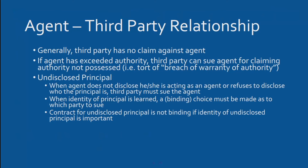Regarding the agent-third party relationship: generally a third party has no claim against an agent. However, if an agent has exceeded their authority, the third party can sue the agent for claiming authority not possessed. So if the insurance company clearly told Sally she can only sell two types of insurance and she goes beyond that, there could be a legal case against the agent.